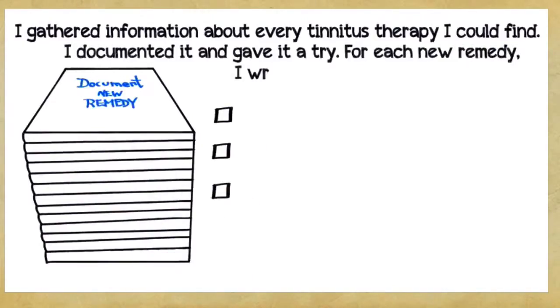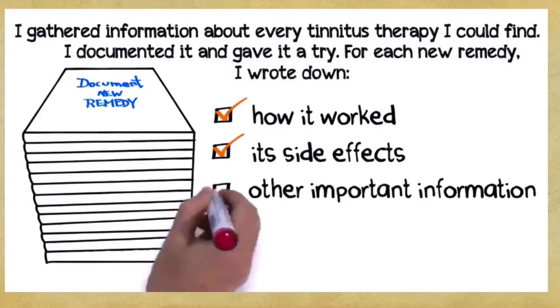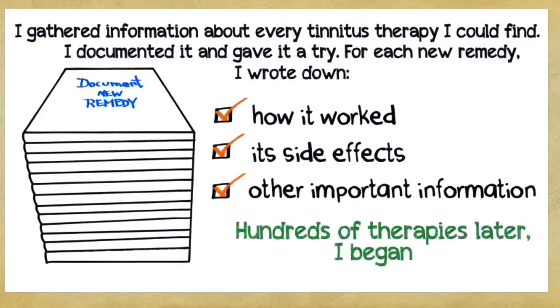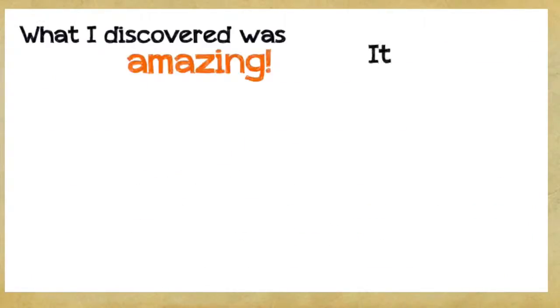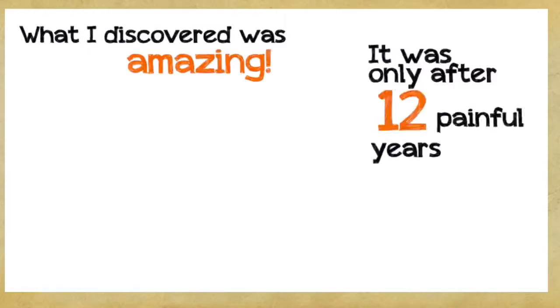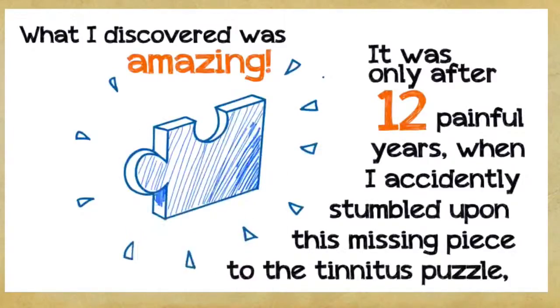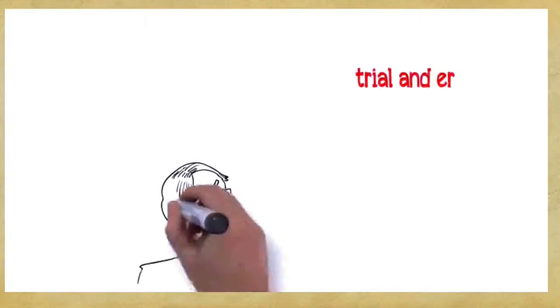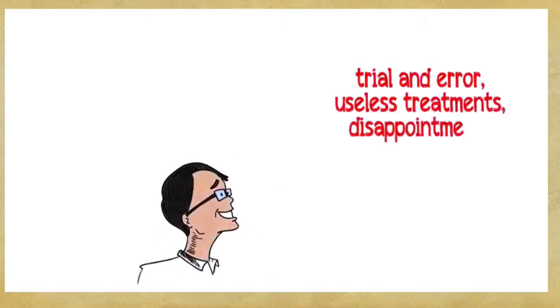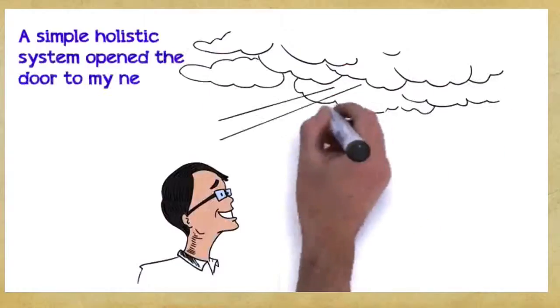For each new remedy, I wrote down how it worked, its side effects, and other important information. Hundreds of therapies later, I began to look for a possible pattern. What I discovered was amazing. It was only after 12 painful years when I accidentally stumbled upon the missing piece to the tinnitus puzzle that my tinnitus completely disappeared. After countless rounds of trial and error, useless treatments, disappointments, and agony, a simple holistic system opened the door to my new tinnitus-free life. My tinnitus and related symptoms such as minor hearing loss completely diminished. After years of suffering, I was finally free from tinnitus.